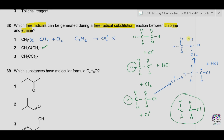This radical can form with the help of a chlorine radical: we get CH3CCl2• along with a radical formed on the carbon atom and an HCl molecule removed. This is consistent with the product given in option 3, so option 3 is also possible. As options 2 and 3 are correct, the answer is C.